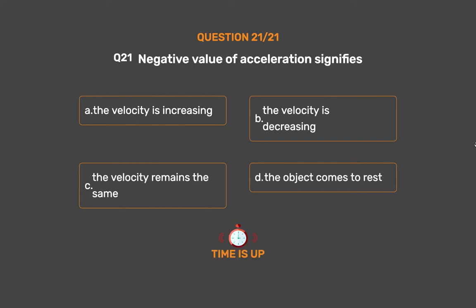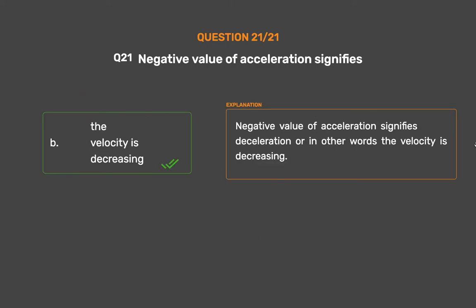The correct answer is Option B: The velocity is decreasing. Negative value of acceleration signifies deceleration — in other words, the velocity is decreasing.